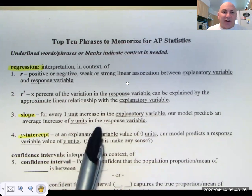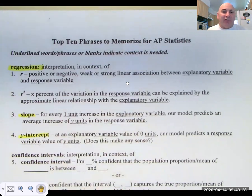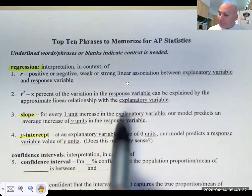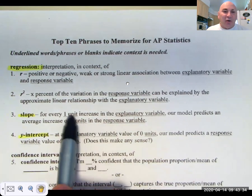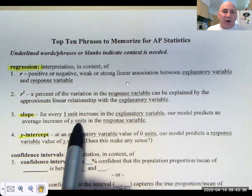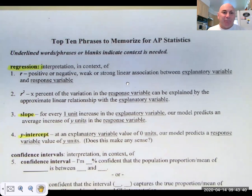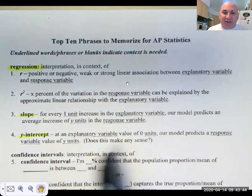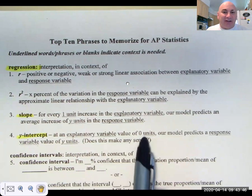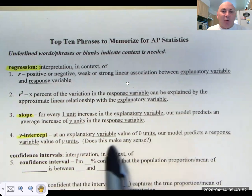Now we have a slope. For every one unit increase in x our model predicts an increase of m units in the response variable because slope is y over x. So if x goes up by one your y should go up by m. And then the y-intercept. If your x value, your explanatory value is zero units, our model predicts a response variable of b units. That may not always make sense.